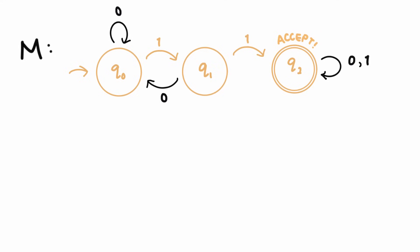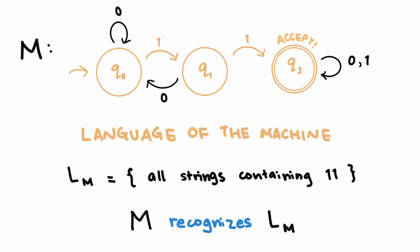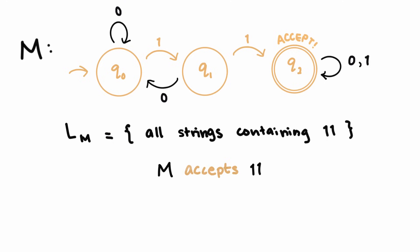All these strings that eventually arrive at one of the machine's accept states are a part of the language of the machine. So the language of this machine is the set of all strings containing two consecutive ones. We say that the automaton recognizes this language, and it accepts all the strings in the language, and rejects those that are not in the language. So M accepts 11, 110, 0110, and so on.